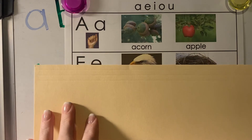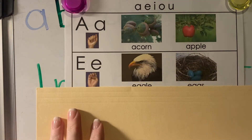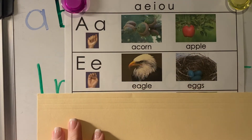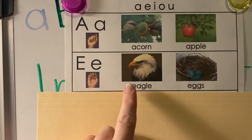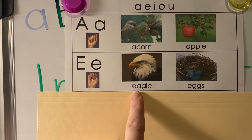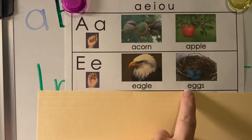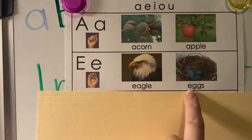If you look down at the next one, we've got our vowel E. E can say its own name, the long sound, as in eagle. Or it can say its short sound, E, as in eggs.